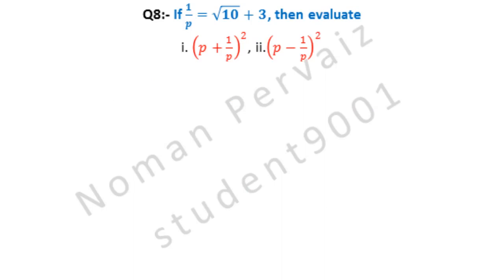Question number 8 is: if 1 over P is equal to √10 plus 3, then evaluate — part 1 is (P + 1/P) whole square, and part 2 is (P − 1/P) whole square.